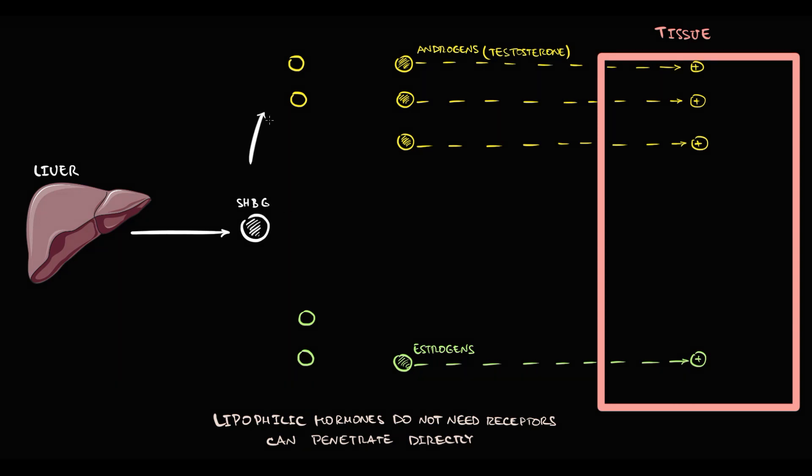Sex hormone binding globulin binds to both androgens and estrogens. And in binded state, sex hormones become inactive. So by this we can have substantial amount of sex hormones in reserve.